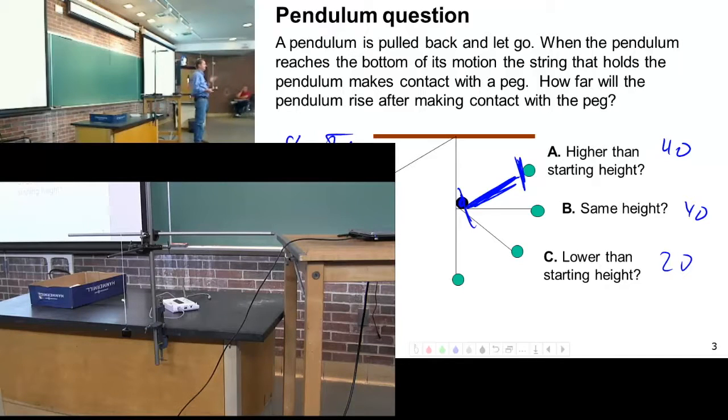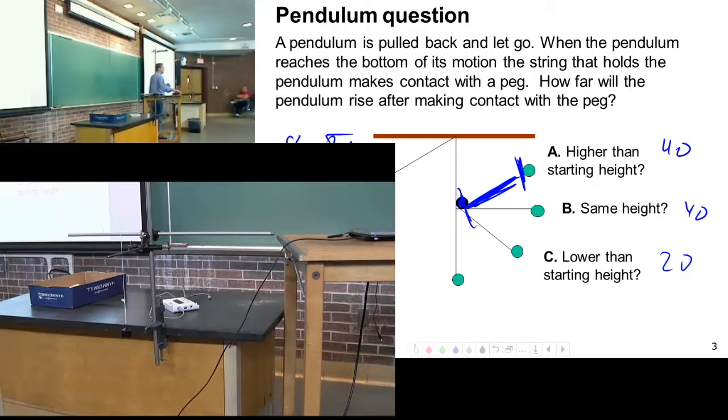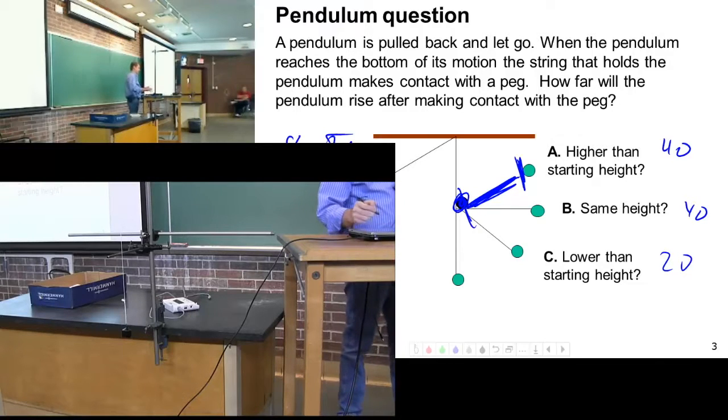What about B? Those of you who chose B? So the peg itself will not give it energy. Therefore, it started with X amount of energy, hits the peg, the peg doesn't give it energy, therefore it can't go higher. Is that the argument?